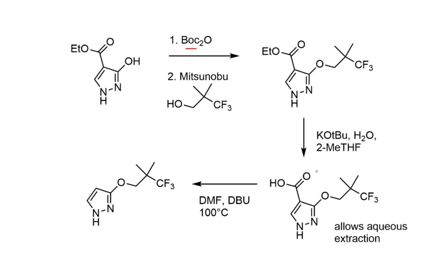The reason for introducing this extra carboxylate was to allow aqueous extraction. One challenge with the previous route was difficulty separating the desired product from Mitsunobu side products. With a carboxylate group, the product could be extracted into the aqueous layer away from the impurities, then obtained in pure form and decarboxylated to afford the product in much better purity.